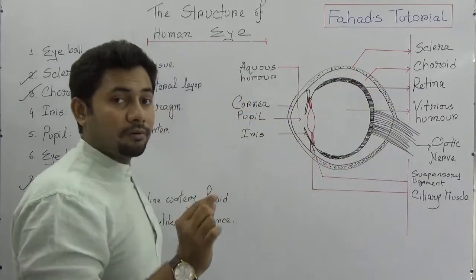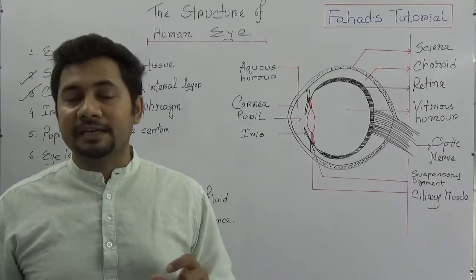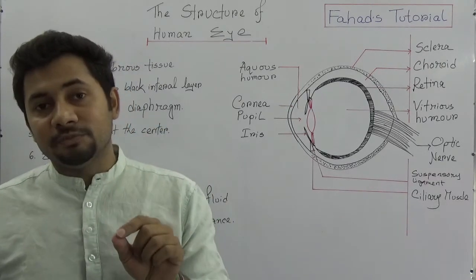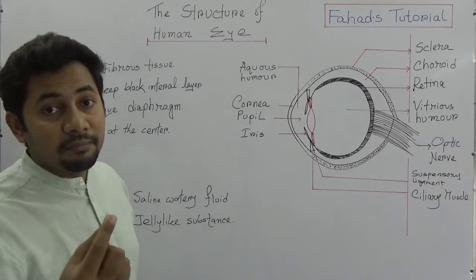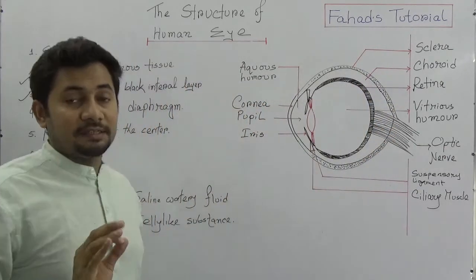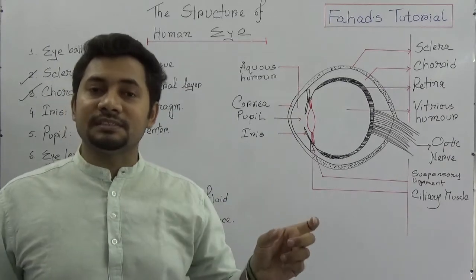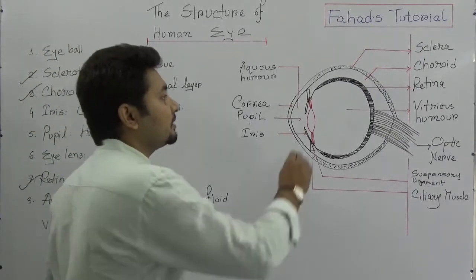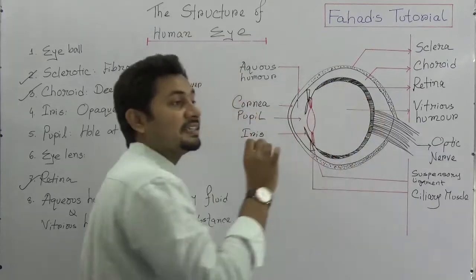The second layer internally is the choroid. The choroid is a deep black internal layer because the presence of melanin makes it black. Due to its black color, it prohibits internal reflections inside the human eye. Then there is the retina, which is a light-sensitive layer. There are two types of cells: rod cells and cone cells. Rhodopsin and iodopsin proteins are the main organic substances forming these rod and cone cells.